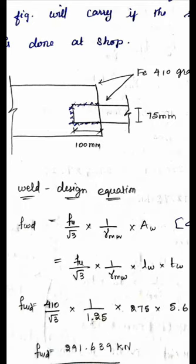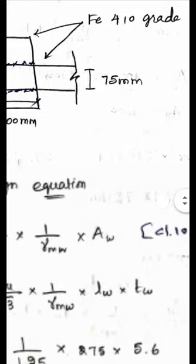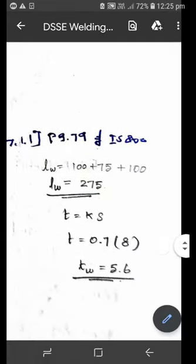I didn't mention about that effective length and actual length, so I am considering that weld whatever weld done on this figure is fully effective. See, 100 mm at the bottom, similarly 100 mm at the top, 75 mm at the edge, 75 mm at the edge.